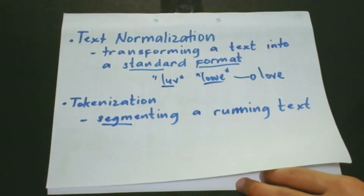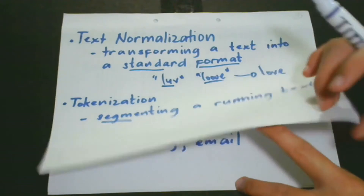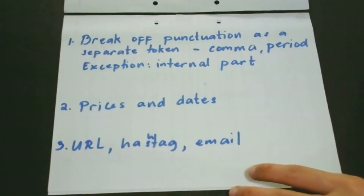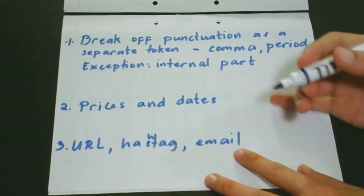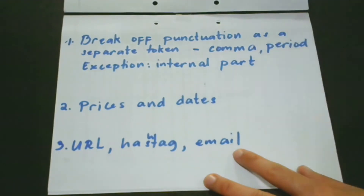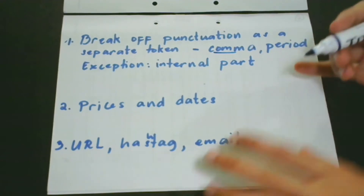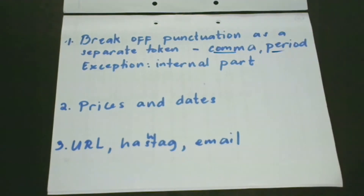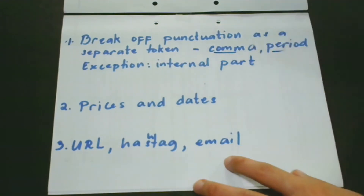If we fail to observe these rules, our output would be wrong, and our natural language processing project would fail. So we have to be very careful. As Rule 1: we break off punctuations as separate tokens. In the case of commas, they are a useful piece of information for parsers. In the case of periods, they are considered separate tokens when they set sentence boundaries.